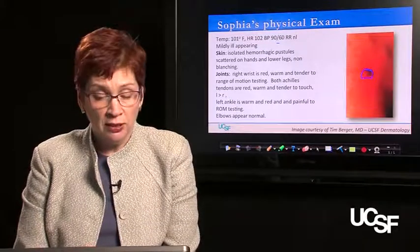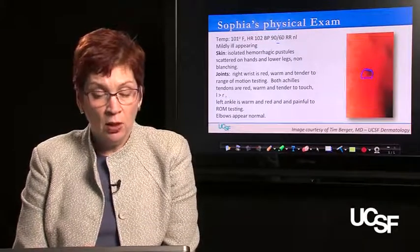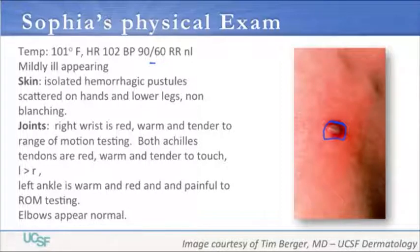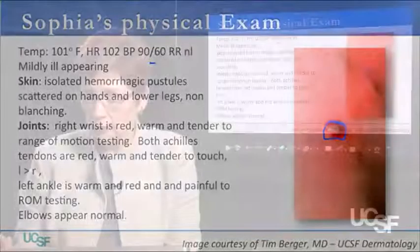The pustules don't blanch when you press on them. Her right wrist is red, warm, and tender to the touch, and it hurts when you move it. Both Achilles tendons are red, warm, and tender to the touch as well, with the left seeming much worse than the right. The left ankle is also warm, red, and painful on range of motion testing. Her elbows, although she complained about them a few days ago, appear normal today.